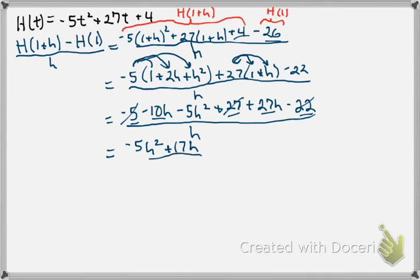And that's all divided by h. We're going to take this one step further because I can factor an h out of the numerator: h times (negative 5h plus 17) all over h, which allows me to cancel that h. So we get negative 5h plus 17.